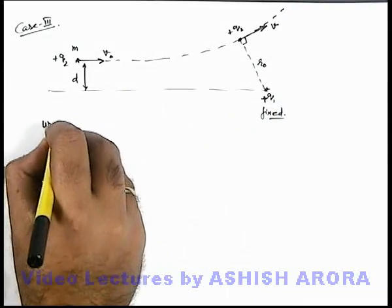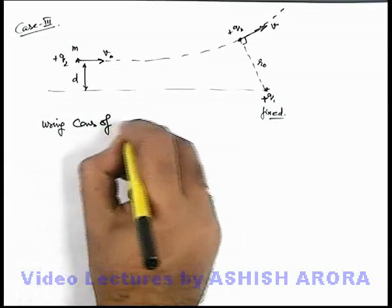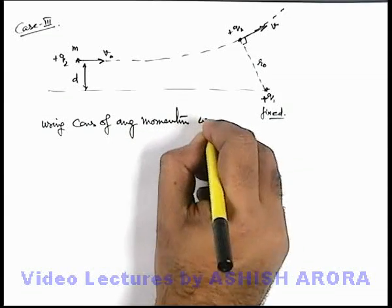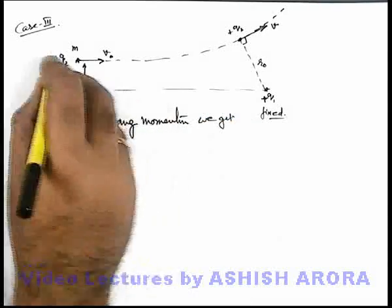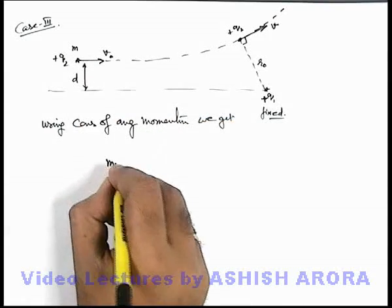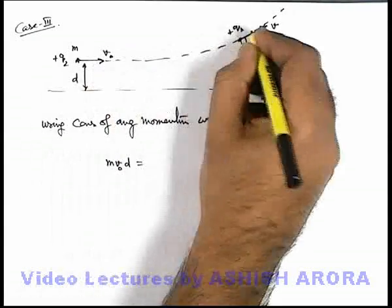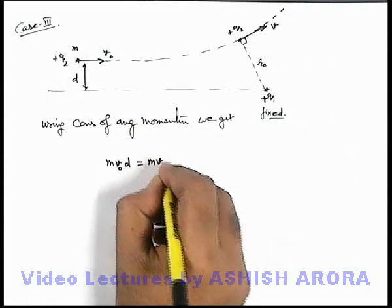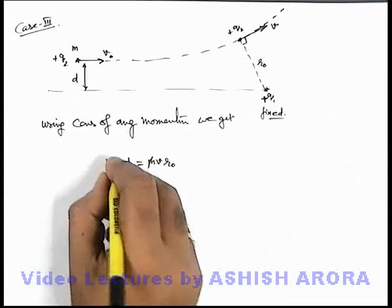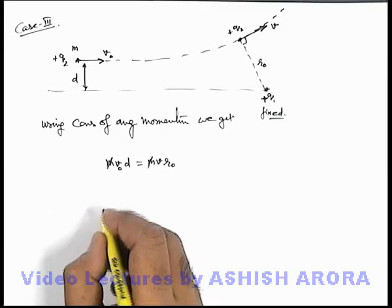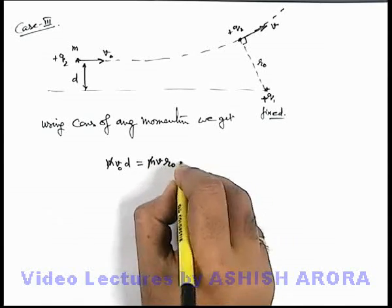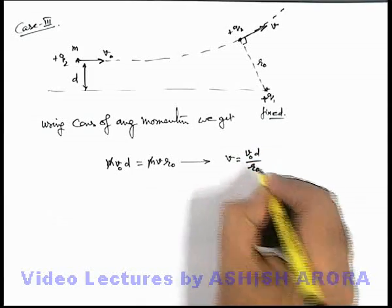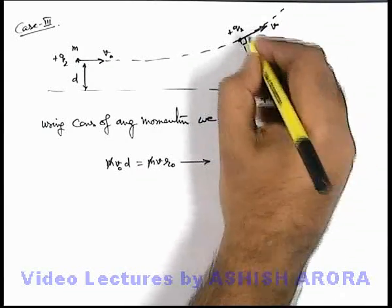Using conservation of angular momentum, the initial angular momentum is m·v₀·d, and at the closest approach position r₀ it equals m·v·r₀. The mass m cancels, giving the speed at closest approach: v = v₀·d / r₀.